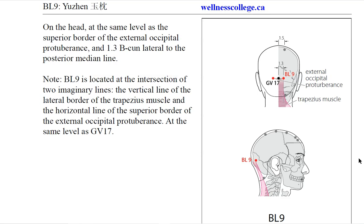Bladder 9, yu zhen, on the head, at the same level as the superior border of the occipital protuberance, 1.3 cun lateral to the posterior median line, which is the lateral border of the trapezius muscle.